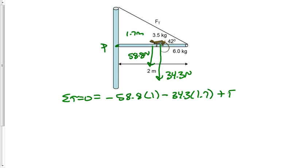Plus force tension times 2, because we're 2 away from the point of rotation, times the sine of 42. Solving for force tension, we get 87.5 newtons.